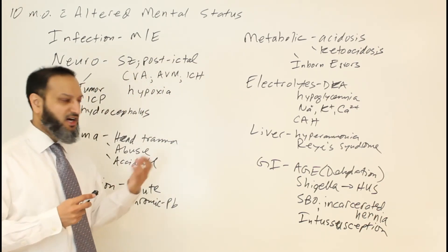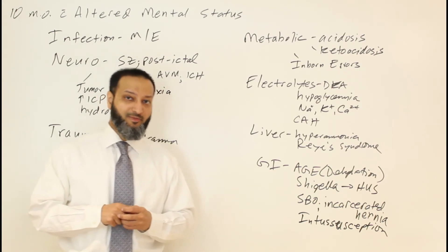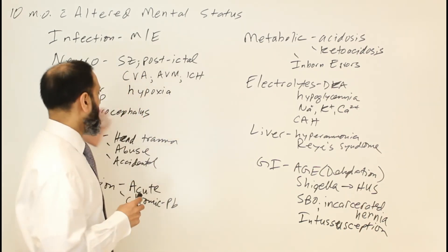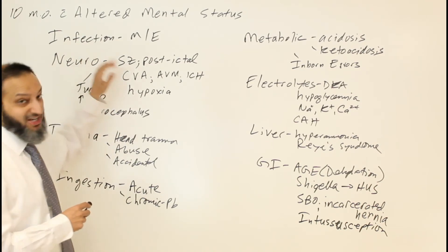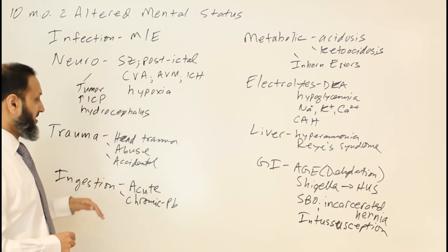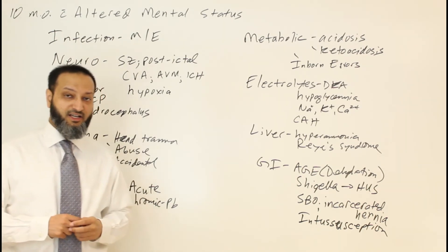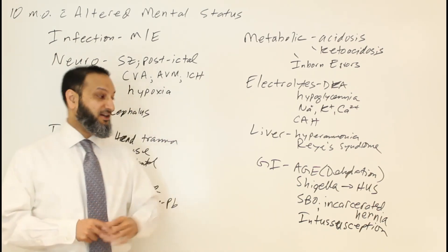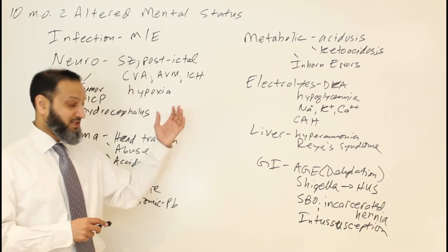From a respiratory standpoint, if you have increased CO2 levels — such as from severe asthma — that can cause lethargy and altered mental status. To summarize the differential diagnosis for altered mental status: infection including bacterial meningitis and encephalitis is a big urgent consideration; neurologic causes; trauma; ingestion; metabolic and electrolyte causes; and GI and liver causes. There are many things to consider on a child coming in with altered mental status. You use your clinical reasoning and analytical skills to create the differential, and the workup is based on the history and exam.